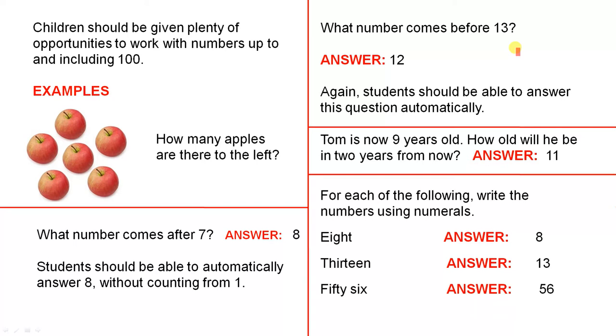What number comes before 13? The obvious answer is 12. Again, students should be able to answer this question automatically. So if they know they're counting very well starting at 1, they know immediately that 12 comes before 13. They don't have to start counting from 1 to get the answer.